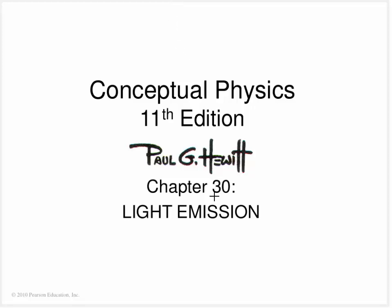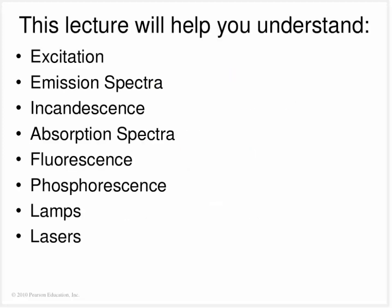This will be the lecture for chapter 30, and now we're going to start to talk about light emission. I'm going to talk about some things that maybe you didn't know. I'll talk about how we can get atoms excited, how they can emit and absorb certain colors - that's a fancy word for spectra. I'll talk about incandescence and fluorescence, absorption spectra, phosphorescence, various lamps, and we'll finish off with lasers.